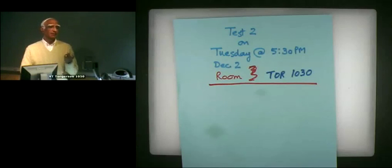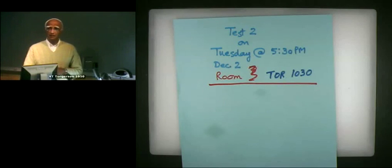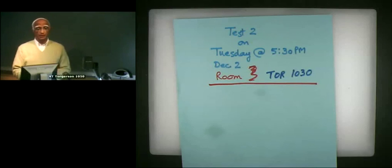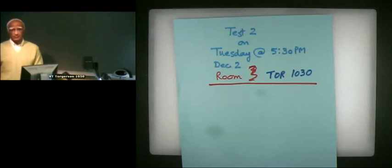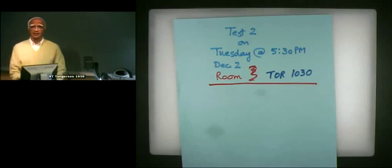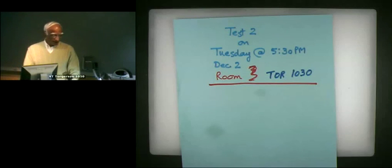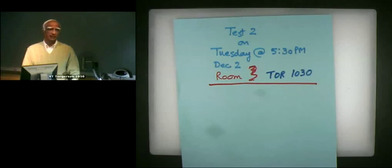Some of you asked about the room for the test. That's Torgersen 1030, I guess, is the next door. So that's on Tuesday at 5:30, and we will have a connection to both Oak Ridge as well as Wake Forest. If you cannot join us from there, then we will make some other arrangements. I will email the test to Oak Ridge and Wake Forest on Tuesday, maybe afternoon.